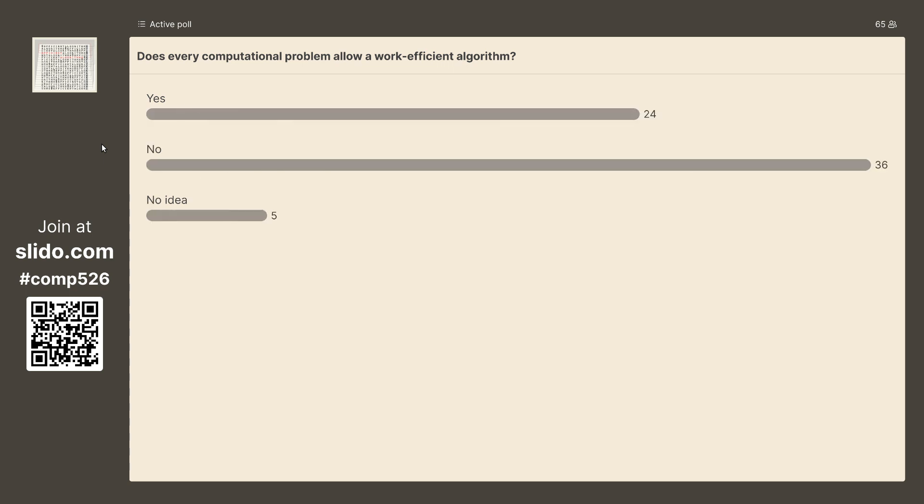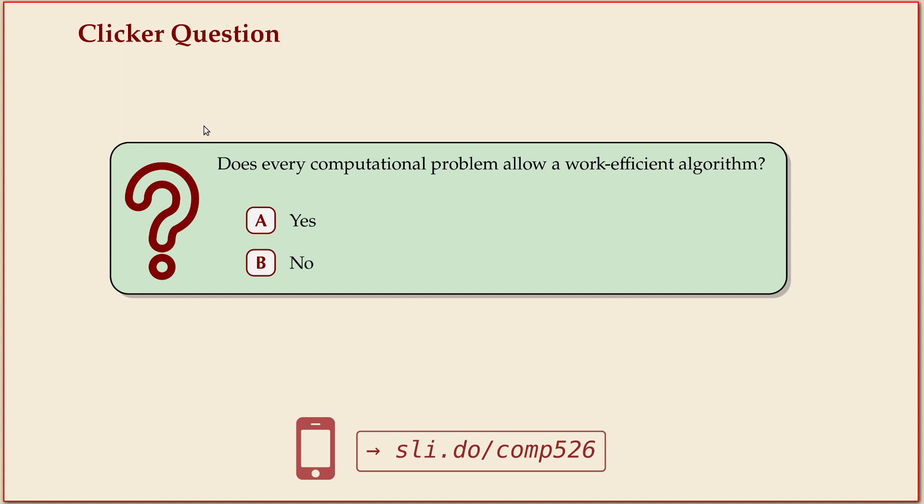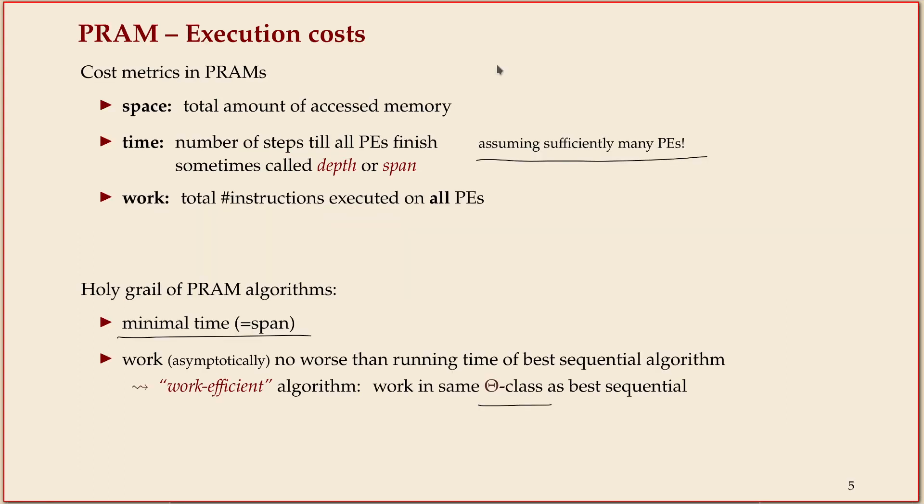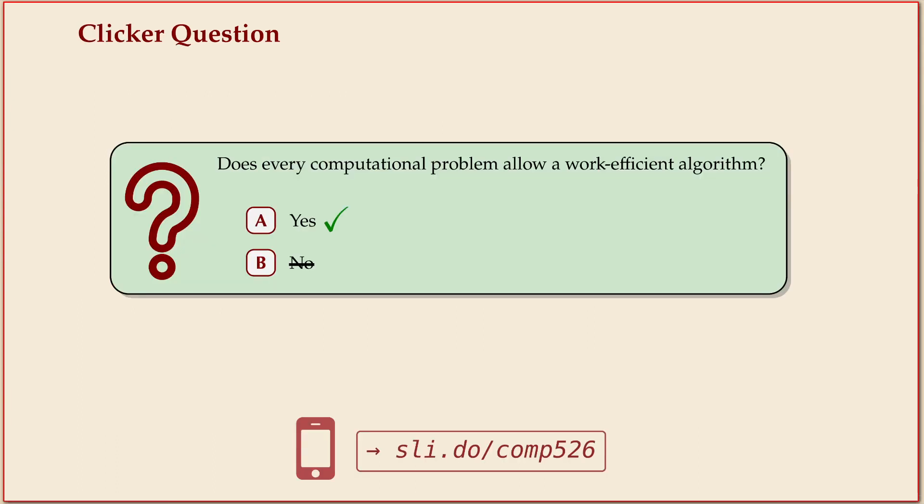Quite a split. If we think about it, it is true you can always find a work-efficient algorithm. The answer why is pretty boring—it's because I haven't told you that this work-efficient algorithm should have good span. Work-efficient in isolation just means what's in the definition, namely the same theta class as the best sequential algorithm. So you can always take the best sequential algorithm, whatever it is, and that is a work-efficient algorithm by definition. It's just maybe a really crappy parallel algorithm because it might not use parallelism at all.